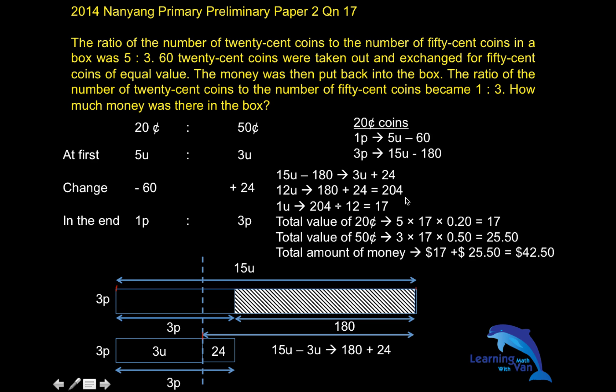So in the number sentence: 15u minus 180 equals 3u plus 24. Therefore 12u equals 204, and solving that gives you 1u equals 17. Once you know the value of one unit, you can find the total value of the 20-cent and 50-cent coins and ultimately the total amount of money. I'll pause here so students can try on their own — don't get confused with units and parts.